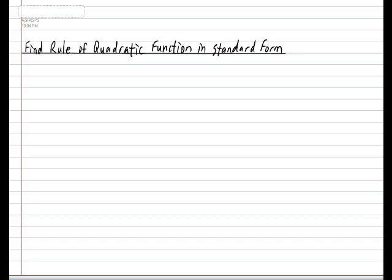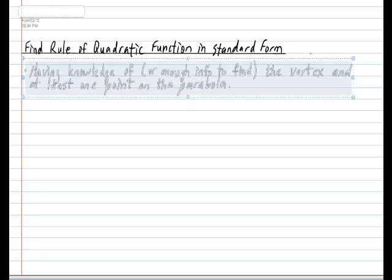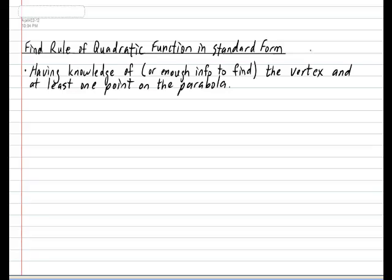Well, finding the rule of a parabola in standard form is actually extremely easy, as long as we have the following information. We are usually given the vertex or you have enough information to locate the vertex and at least one point that the parabola passes through. With these two pieces of information in hand, it is very easy to calculate the rule of the parabola in standard form.